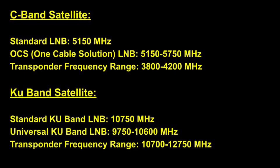Your receiver expects the transponder frequency you enter to be within a certain range for each band of satellite. If you're entering a C-band satellite transponder, you're probably using one of two types of LNBs: either a standard C-band LNB with a local oscillating frequency of 5150, or a one-cable solution with a dual oscillating frequency. Your transponder frequency has to be somewhere between 3,800 and 4,200 megahertz.